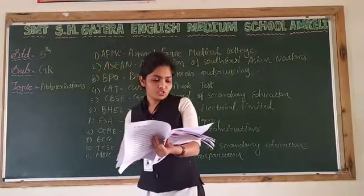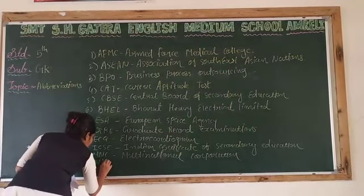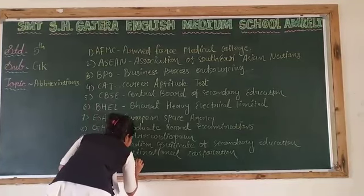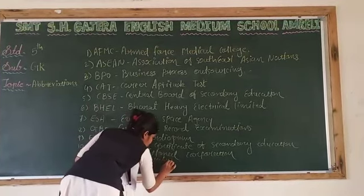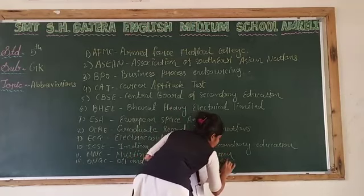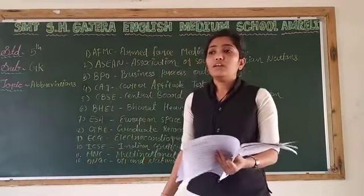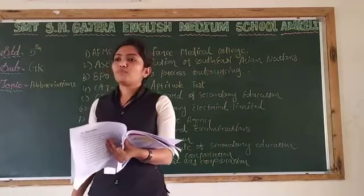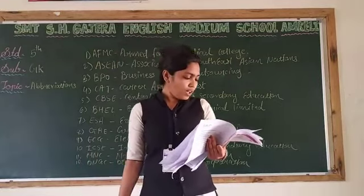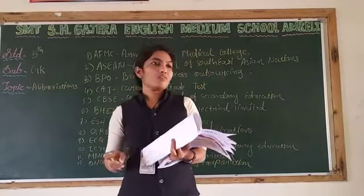Number twelve is ONGC. ONGC stands for Oil and Natural Gas Corporation. Oil and Natural Gas Corporation is an Indian multinational company and is the largest producer of oil and natural gas in India.